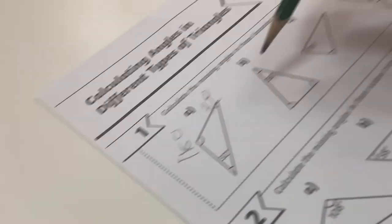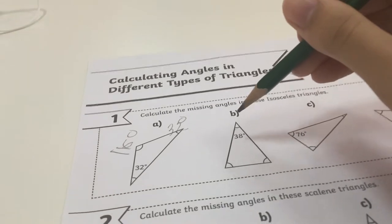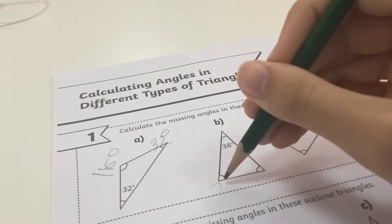And here the angles are a bit different. So if this one is 38, I'm going to put 180 minus 38 is 142. Then I'm going to put 71 degrees.